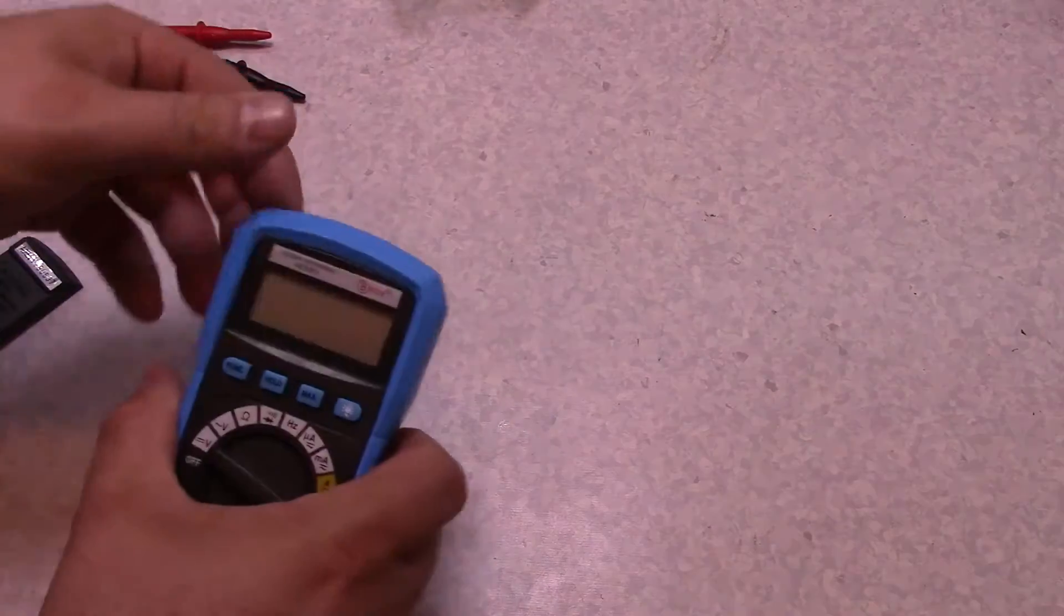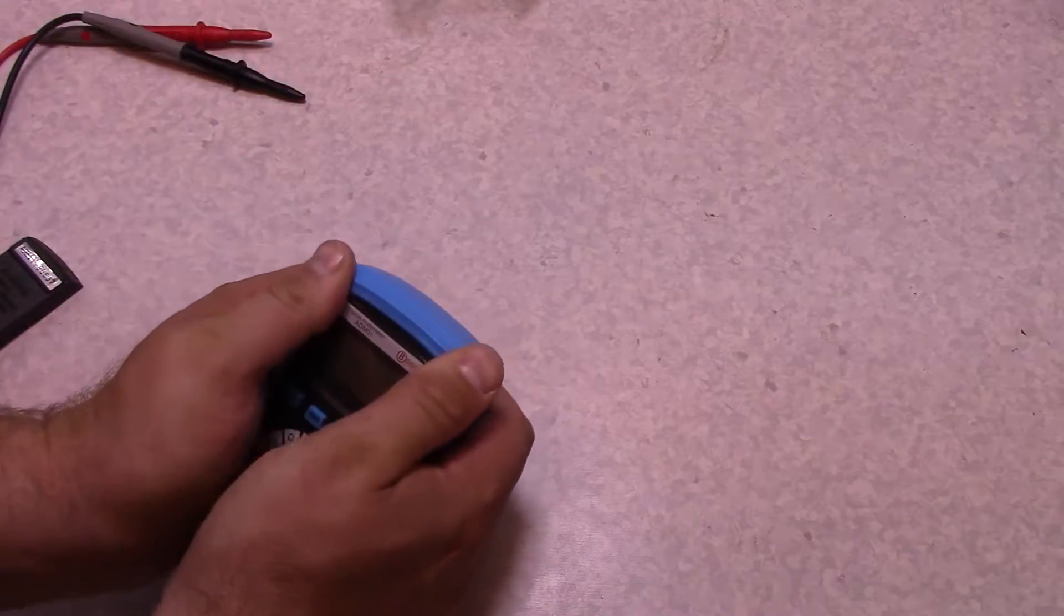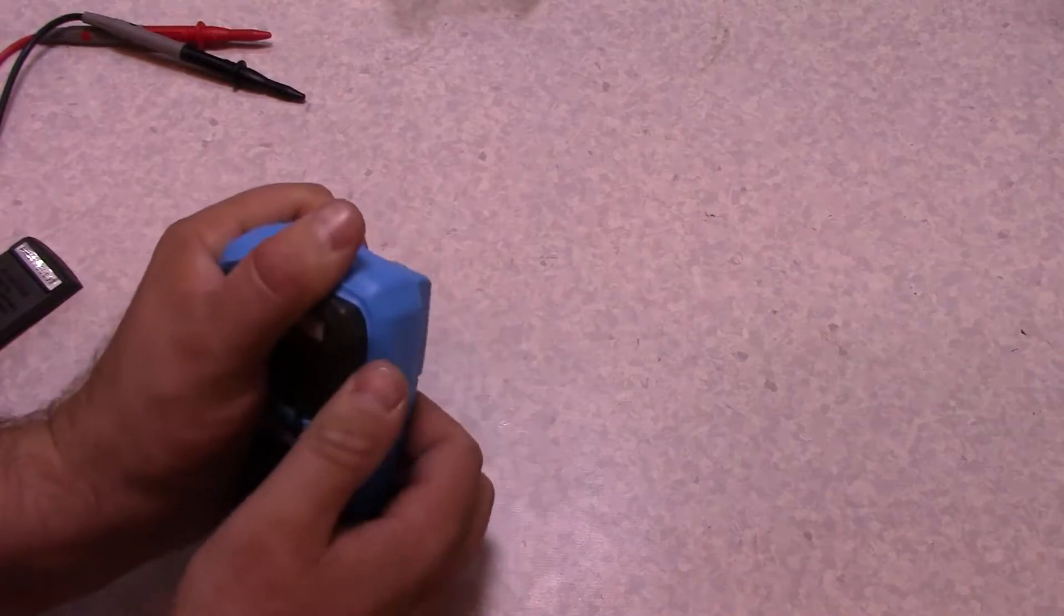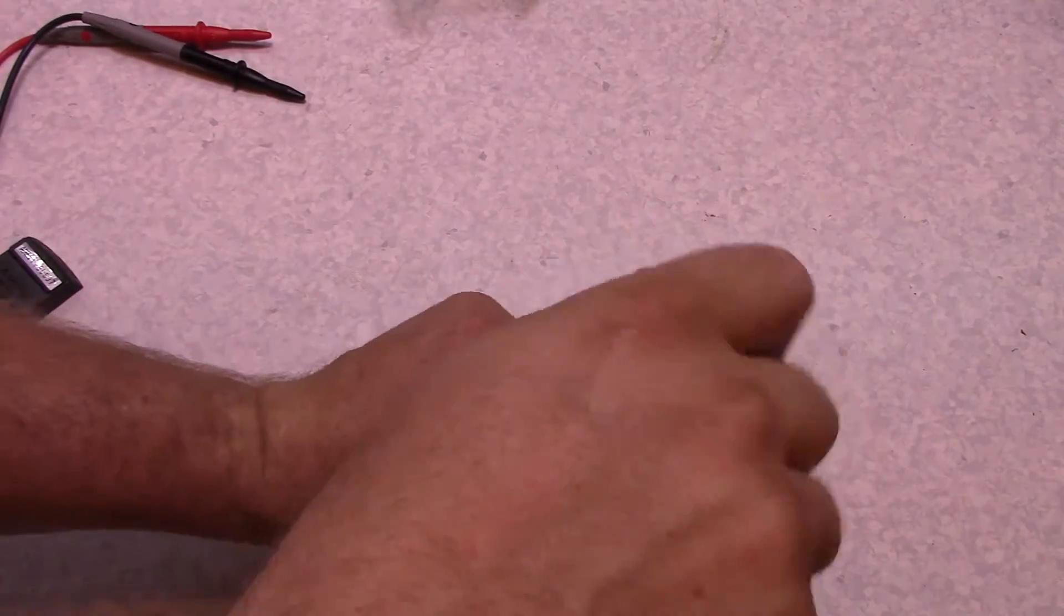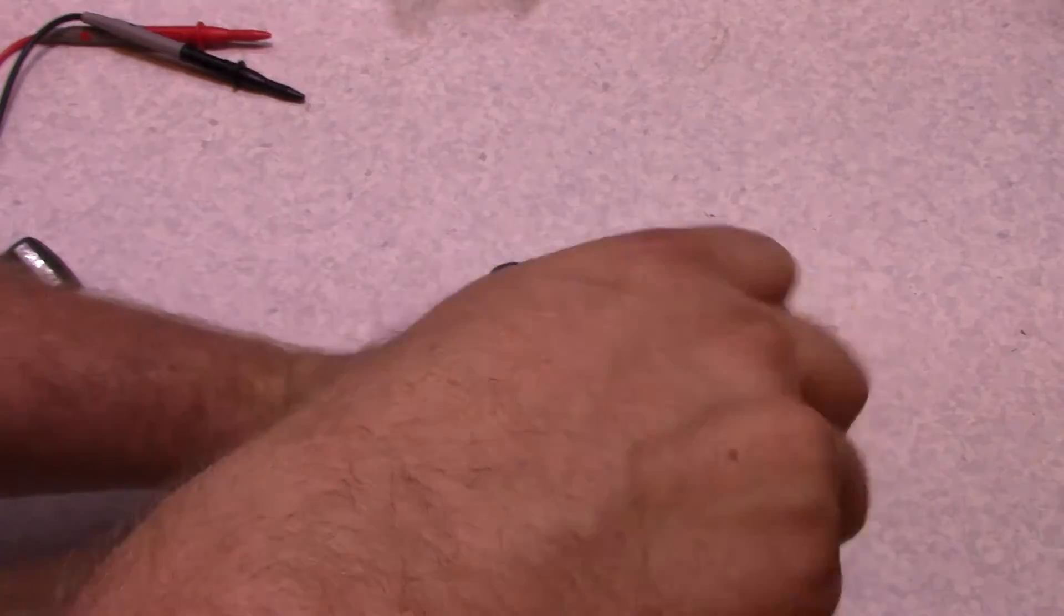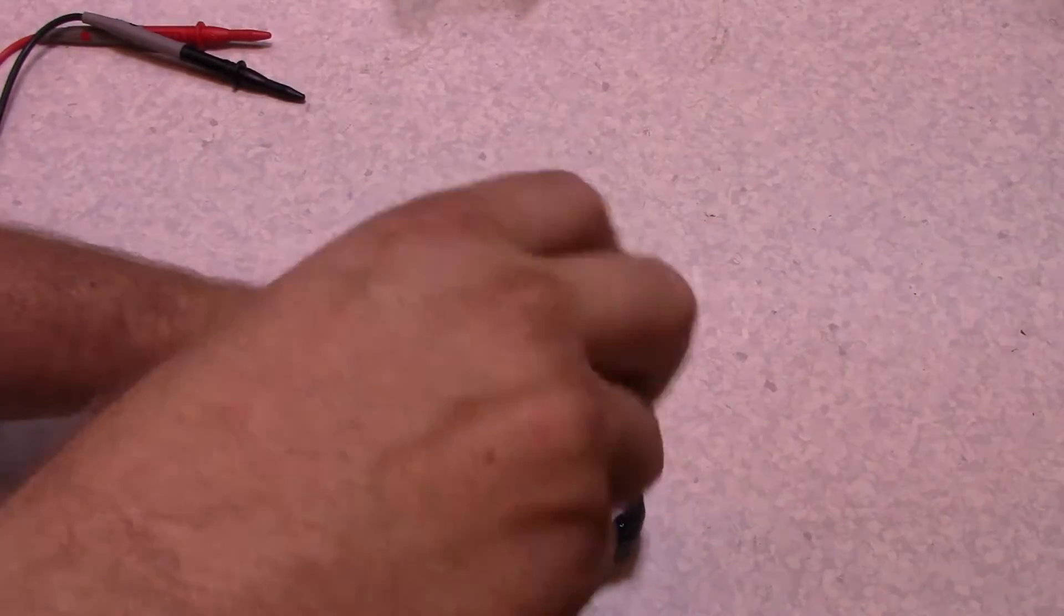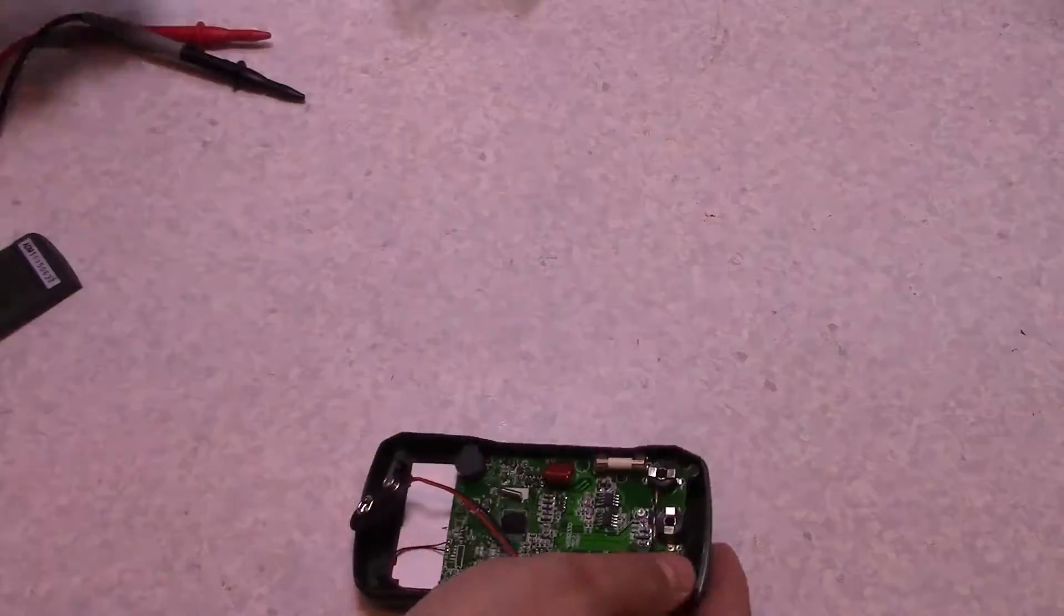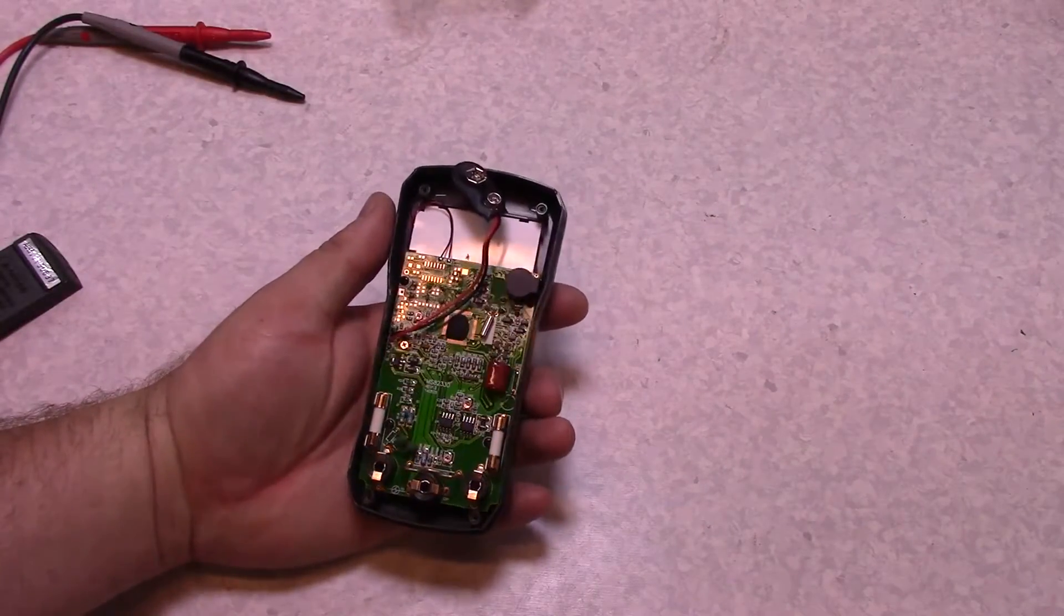Really surprised there. There's actually a threaded metal insert to hold that screw for the battery compartment. Don't expect to see that on the rest of it. Yeah, she needs a 9-volt battery, and I guess I gotta pop this off to get the other screws.